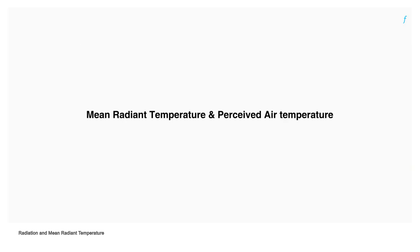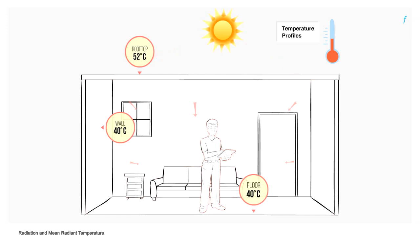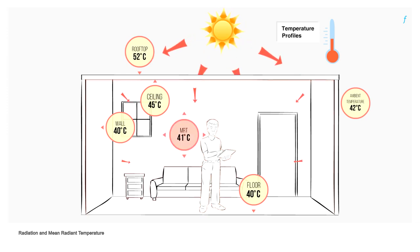Mean radiant temperature and perceived air temperature: One of the fundamental properties of heat transfer is that heat flows from a hotter body to a cooler body. In any room, there is constant heat exchange between the walls, roof, floor, people, and other objects. The weighted average of the temperatures at which the surfaces of all such objects in a room radiate heat is the mean radiant temperature.